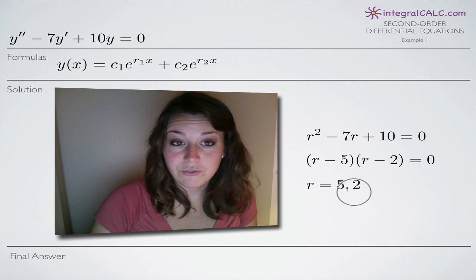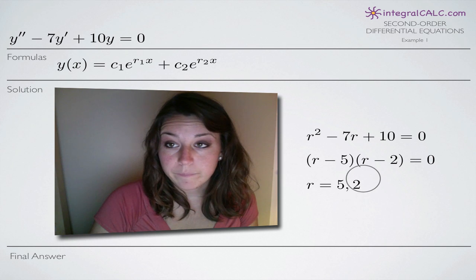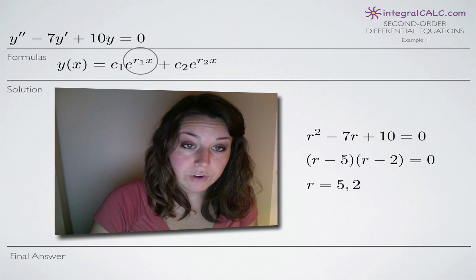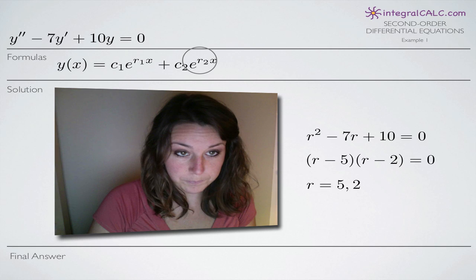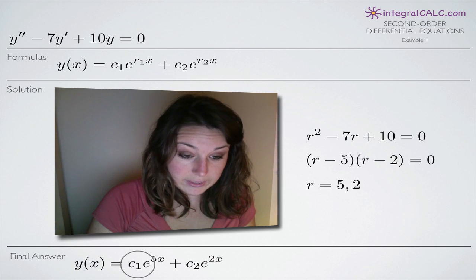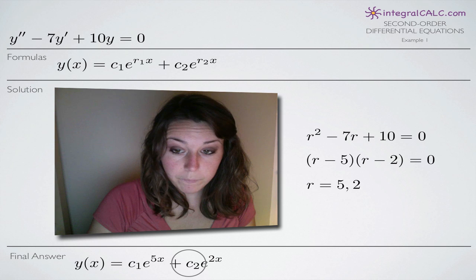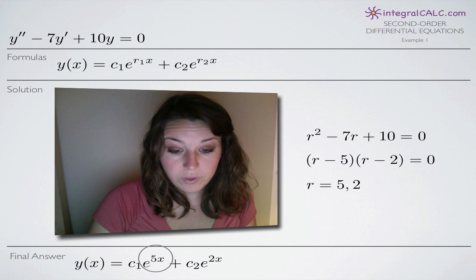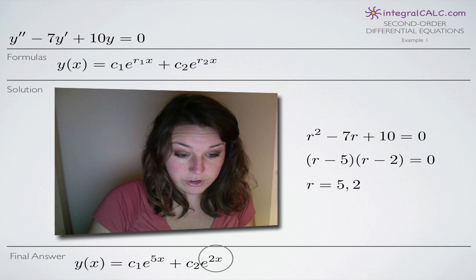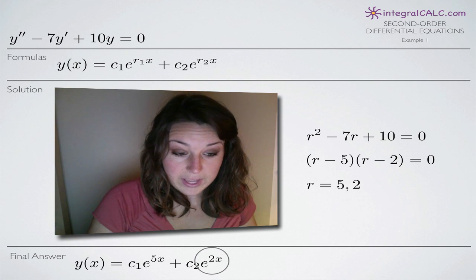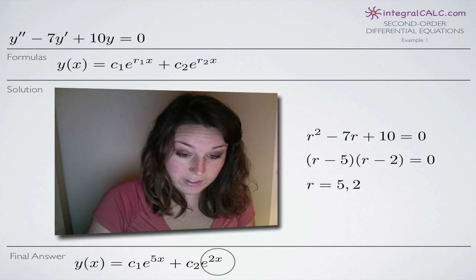You're always going to get 2 solutions when you do a second order differential equations problem. And you're going to plug one in for r1 and the other in for r2. So our final answer, remember we said we were going to leave c1 and c2, but we end up replacing r sub 1 and r sub 2 with the two solutions that we just found. So we end up with c sub 1 e to the 5x plus c sub 2 e to the 2x. And that's our final answer.